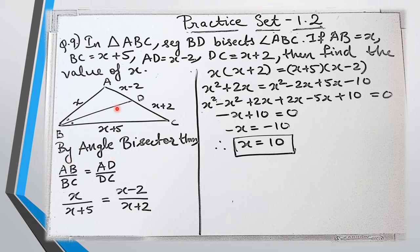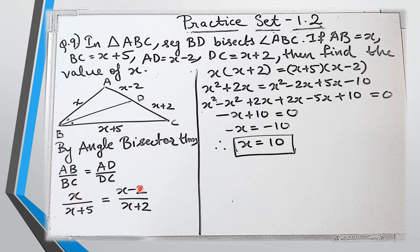By the angle bisector theorem — which is obviously involved here since BD is the bisector of angle ABC — AB upon BC equals AD upon DC. Substituting the values: X upon X plus 5 equals X minus 2 upon X plus 2. Now we multiply the denominators to the other sides, giving X into X plus 2 equals X plus 5 into X minus 2.